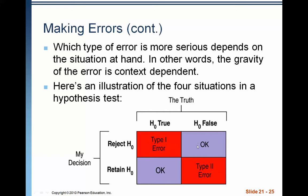If we reject the null hypothesis when it's actually false, that's okay — that's exactly what we want. We had a false null hypothesis and we rejected it — fantastic. If we fail to reject a true null hypothesis, again, that's perfect — that's exactly what we want. However, when we fail to reject a null hypothesis when the null hypothesis is actually false, that is a type 2 error, and we want to avoid those situations when possible.